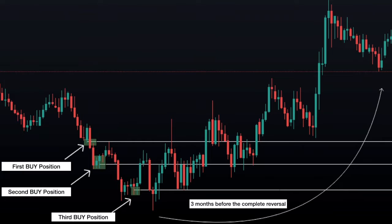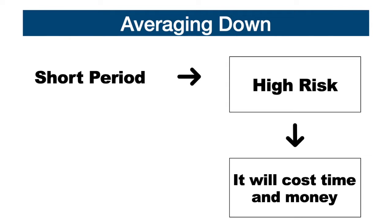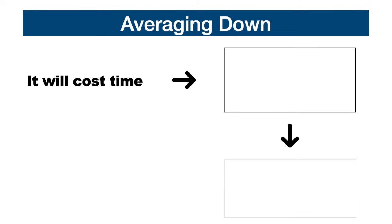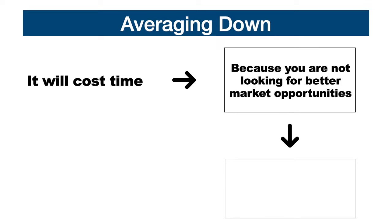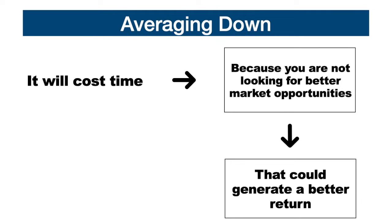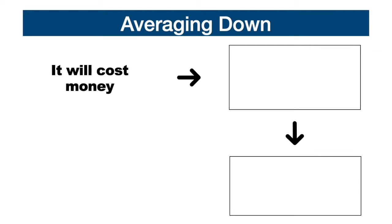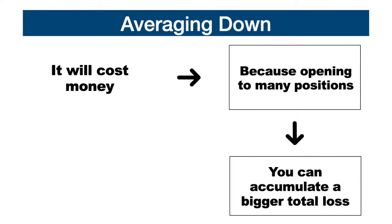For all traders who instead rely on the short-term, averaging down represents a risk that will cost time and money. It will cost time because the time used in opening further positions on a negative trade, in the hope of recovering, will not allow analyzing other currency pairs to find potential new opportunities that could generate a higher return. It will cost money because by opening further positions on a negative trade, you risk accumulating a greater loss, and consequently risking a high percentage of your capital without even trying to diversify your portfolio.